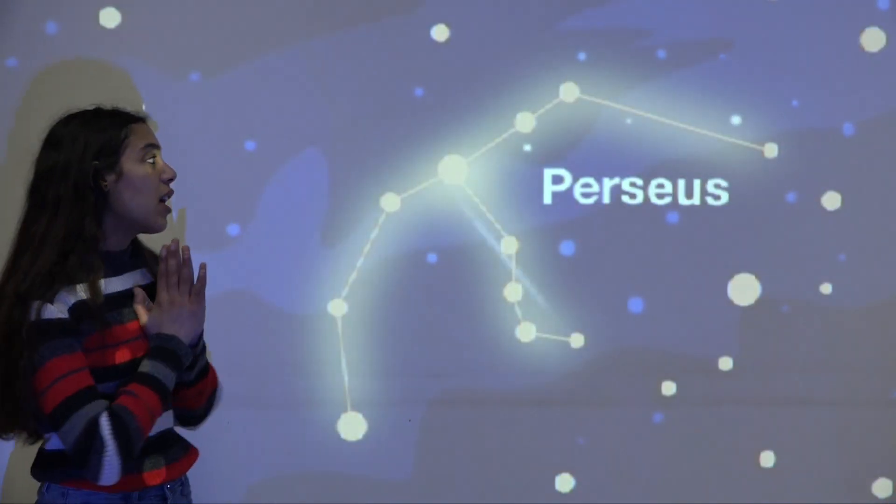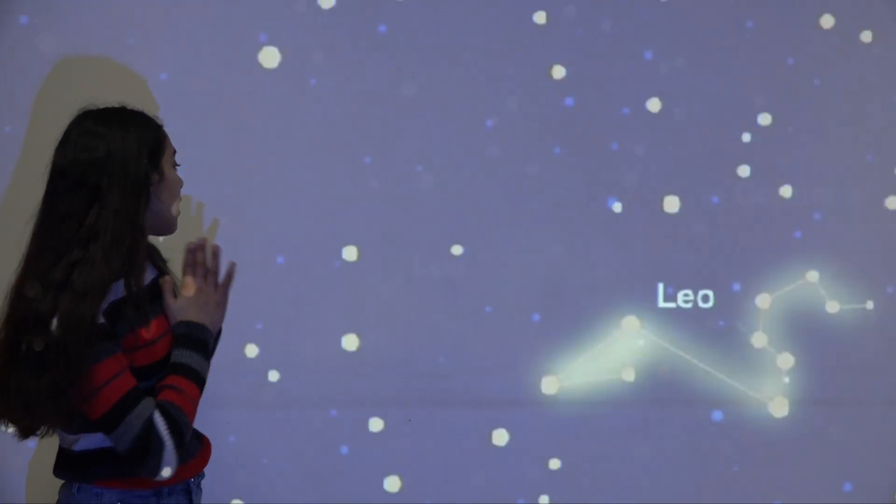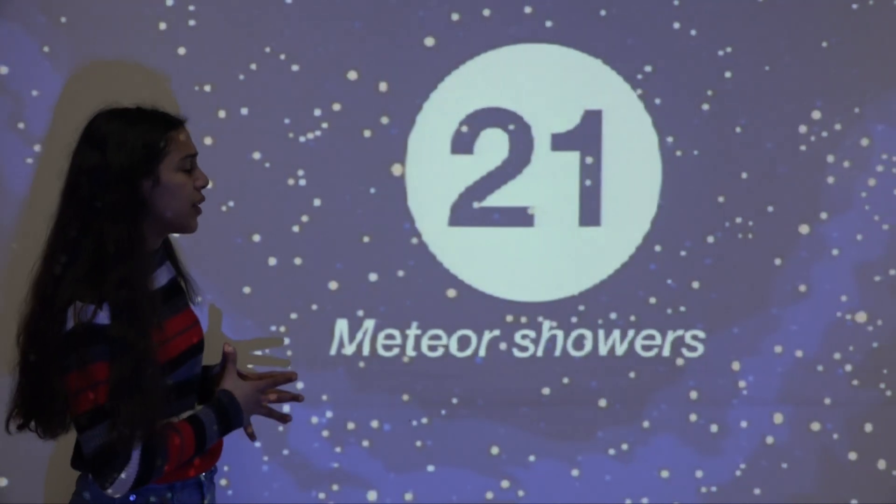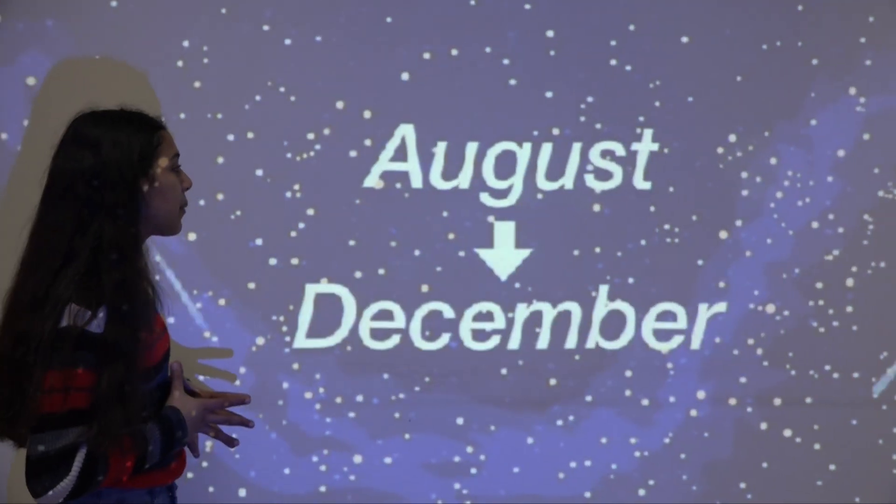Meteor showers are usually named for the constellation from which they appear to radiate. The most famous ones are Perseids, Geminids, Leonids, and Lyrids. However, it's estimated that there are around 21 meteor showers every year, most occurring between August and December.